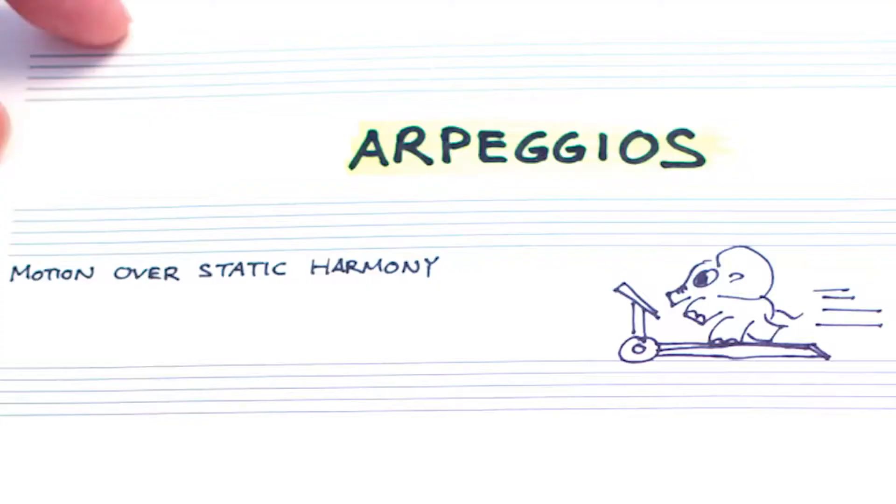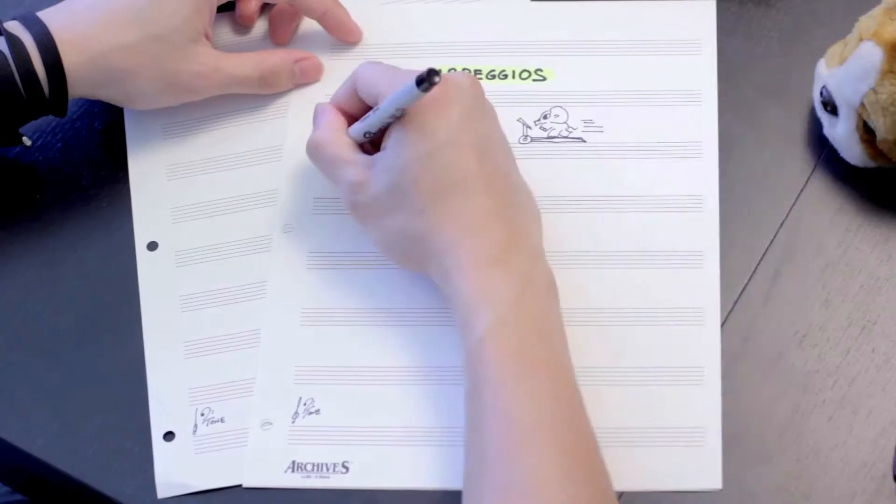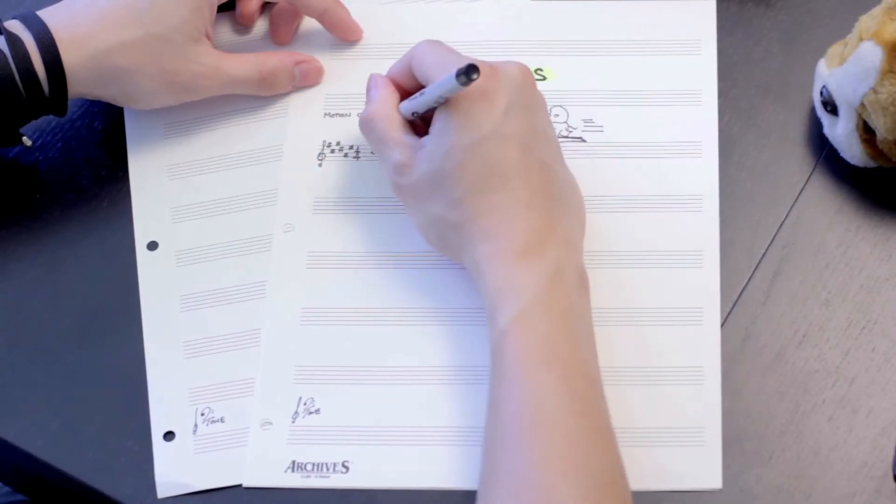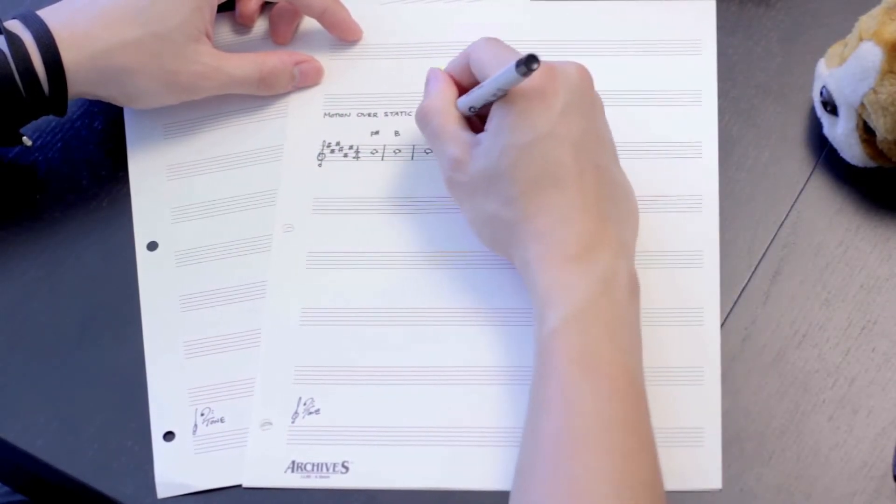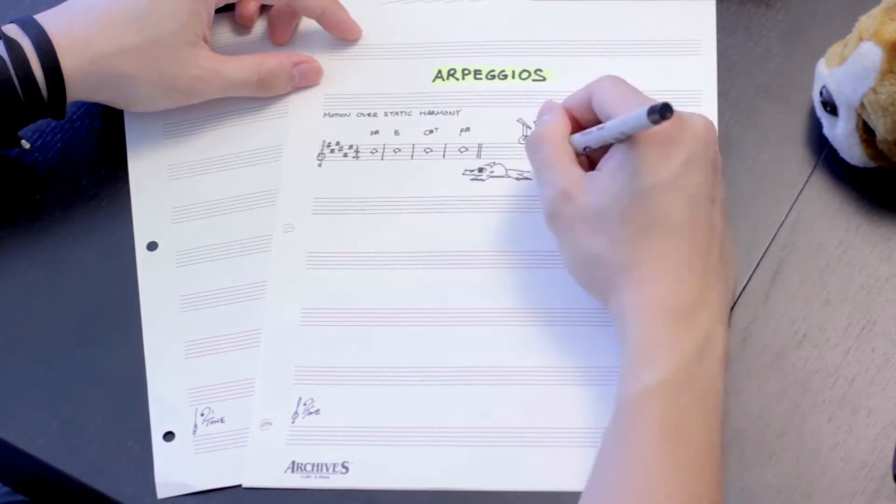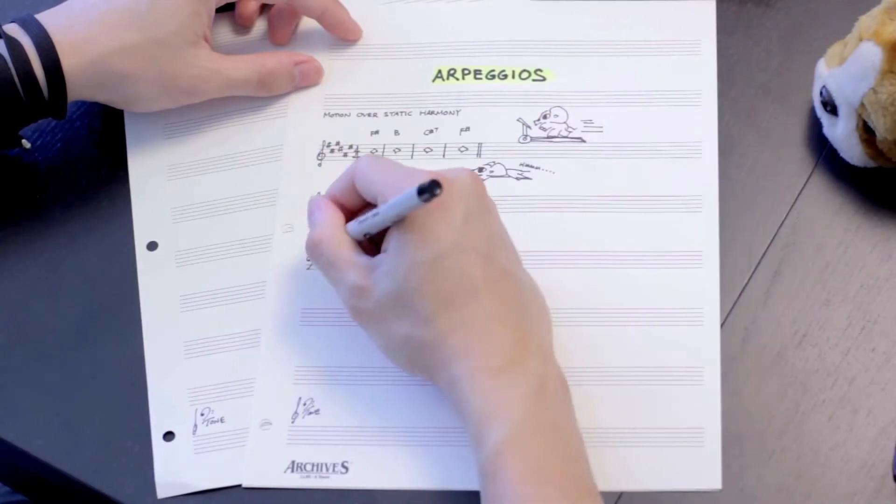In effect, to play an arpeggio is to play the notes of a chord in succession rather than simultaneously. So for instance, if we take this chord progression, there's a lot of empty space in between the chords, nothing's really happening. But if we instead play the notes of the chords one at a time...